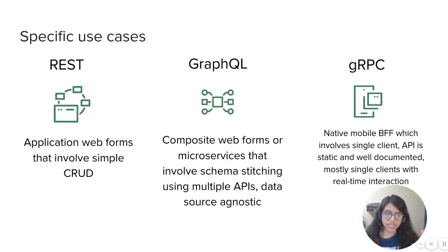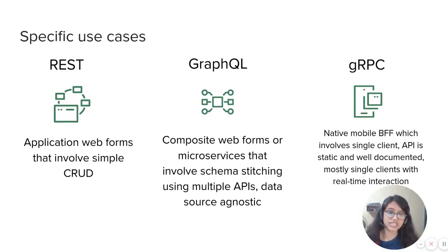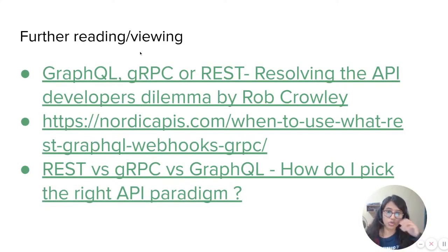Summarizing all of this: when you have application web forms that involve simple create, read, update, and delete, go ahead with REST. If you have composite web forms or microservices that involve schema stitching using multiple APIs and the APIs are data-source agnostic, go ahead with GraphQL. And if you have to develop a native mobile backend-for-frontend, which involves a single client, the API is static and well-documented, or mostly single clients with real-time interaction, go ahead with gRPC.